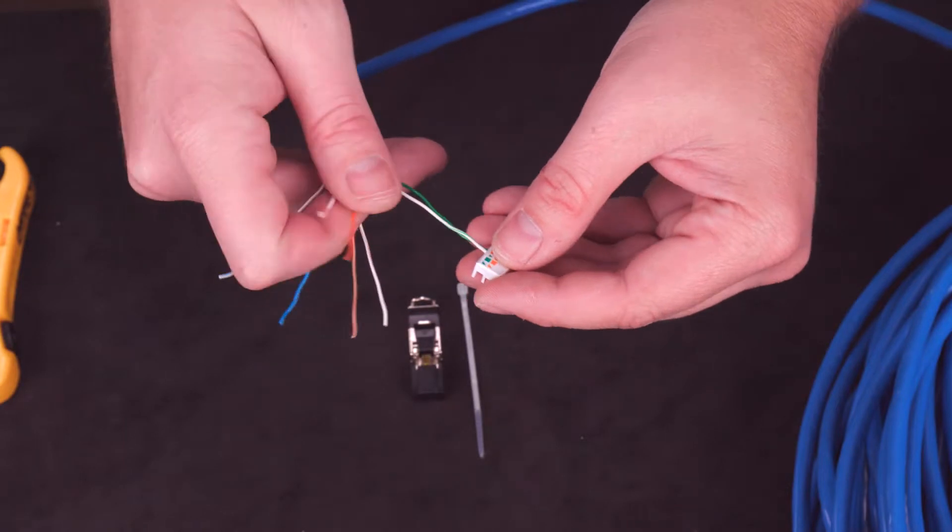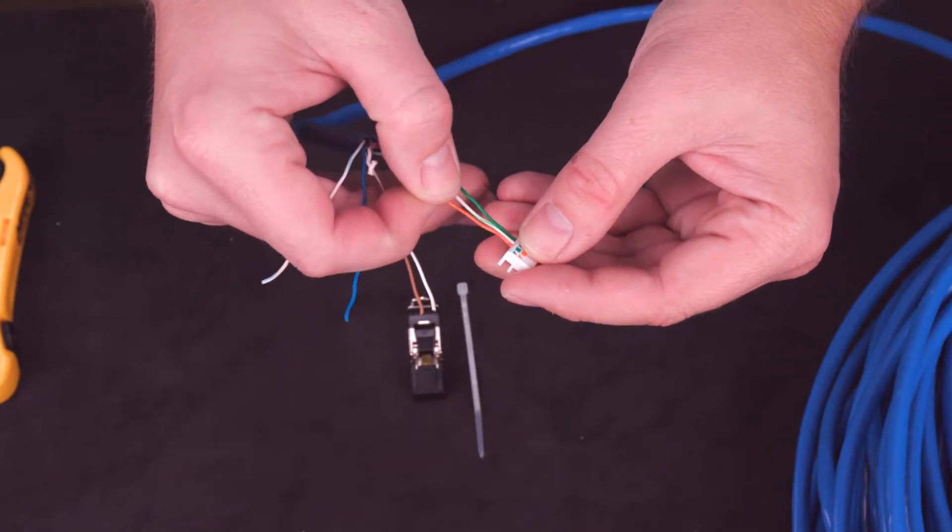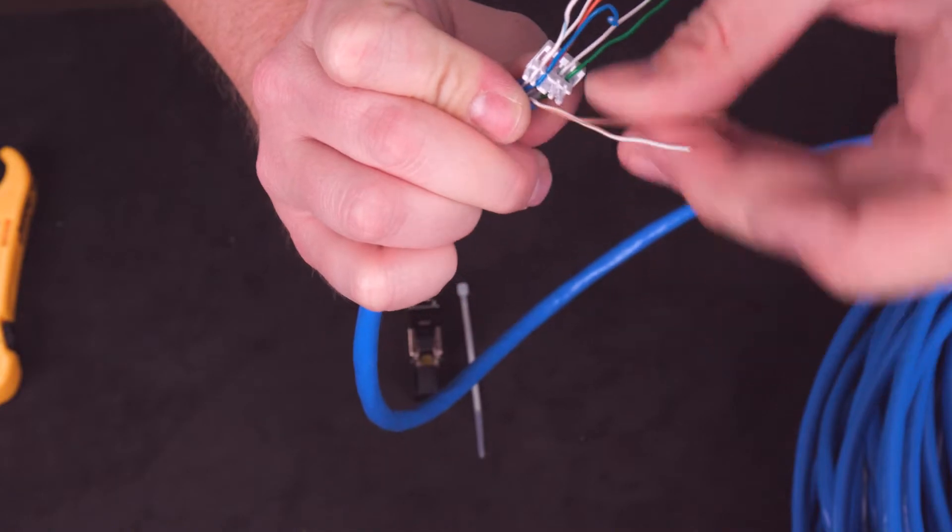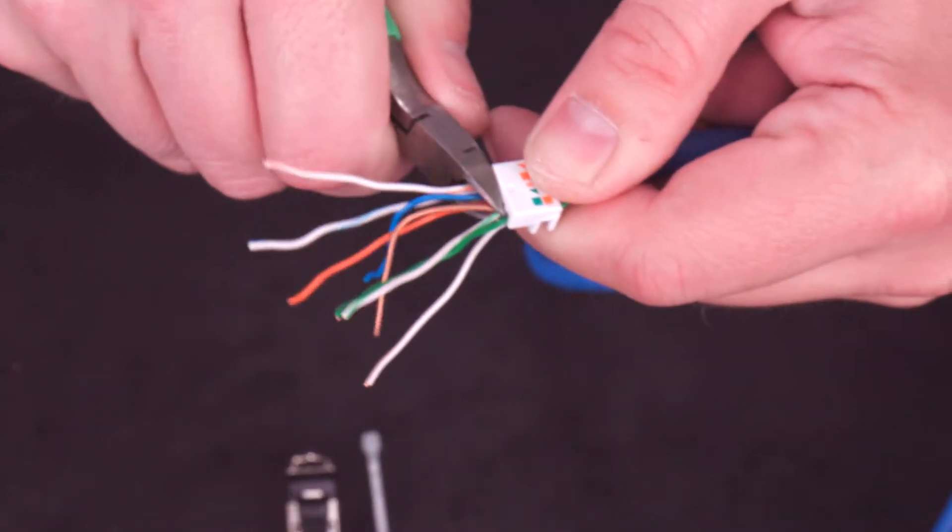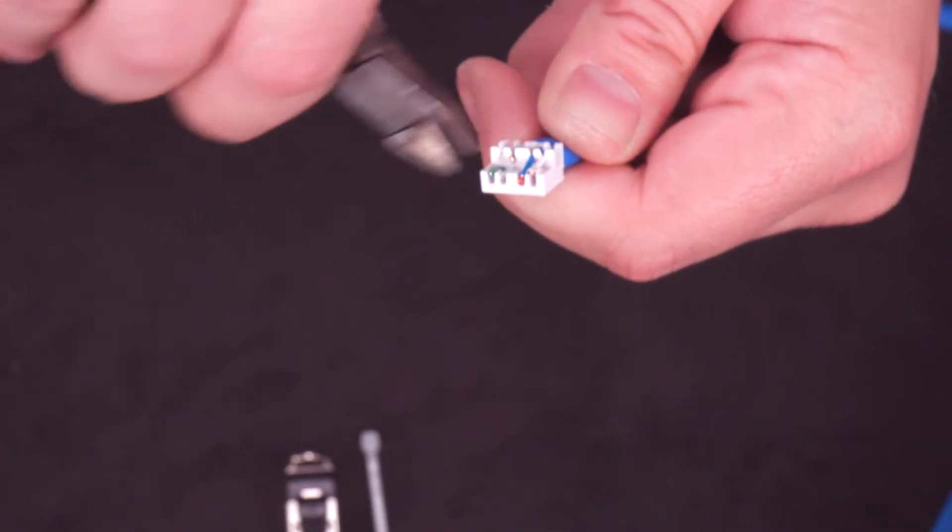Insert all the wires into the proper position. Slide the insert back as far as possible against the cable. Trim off all the excess wires on both rows.